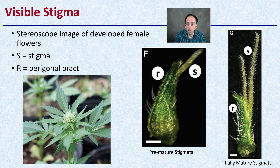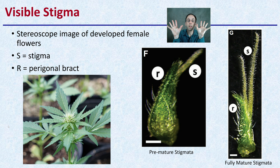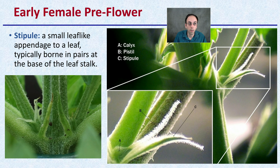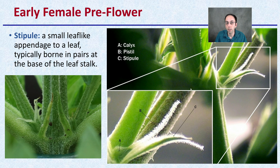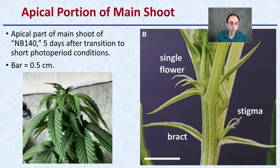Going back to the stigma — looking at a zoomed-in stereoscope image of developing female flowers, we can see a premature stigma just starting to develop, and a fully mature one that is much larger with fine little hairs, because it's responsible for capturing pollen. Female flowers produce high concentrations of stigmas to increase the odds of intercepting pollen floating in the air. In early female pre-flowers, we can identify the stipule, the calyx, and the pistil, which includes the stigma. The stipule is a small leaf-like appendage typically born in pairs at the base of a leaf stalk, and you'll often see it in pairs at the node region.